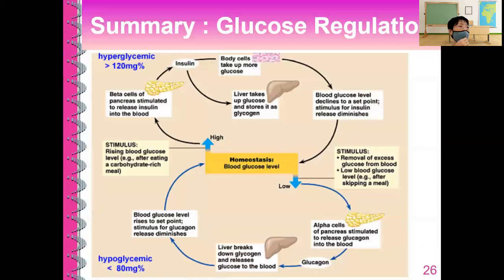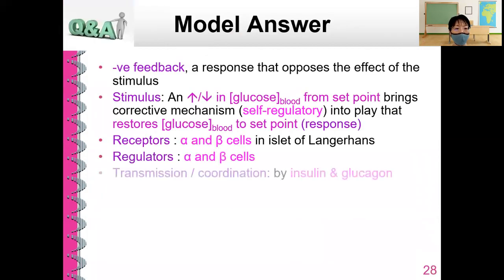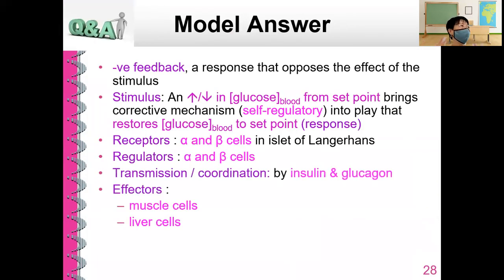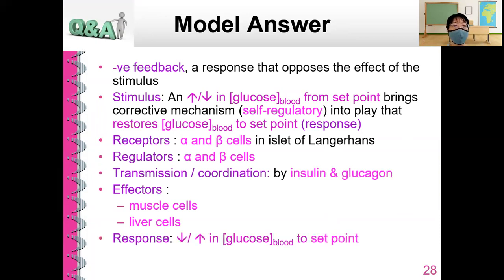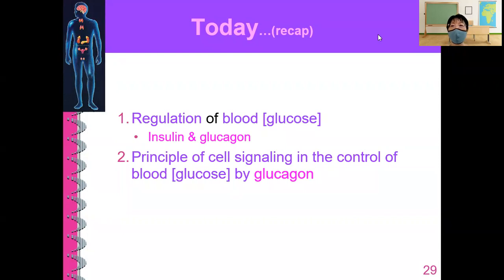The sample question and answer in the notes can be read and tried yourself — it asks you to describe the stimulus-response model in regulating blood glucose concentration. That is all for today. We have looked at the regulation of blood glucose concentration using insulin and glucagon, and the principle of cell signaling in the control of blood glucose concentration. Thank you everyone.